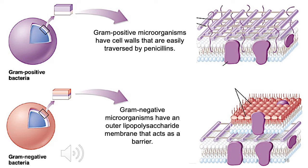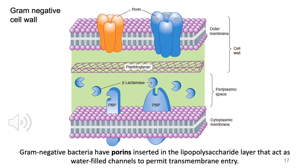Gram-positive microorganisms are easily penetrated by penicillins primarily because they have a very thick peptidoglycan layer not covered by an outer membrane. Gram-negative bacteria, on the other hand, have outer lipopolysaccharide membranes that act as a barrier. Gram-negative bacteria have porins — water-filled channels that permit transmembrane entry of penicillin — so the drug can still act on the peptidoglycan layer. Note that beta-lactamases are present in the periplasmic space, representing an important resistance mechanism.